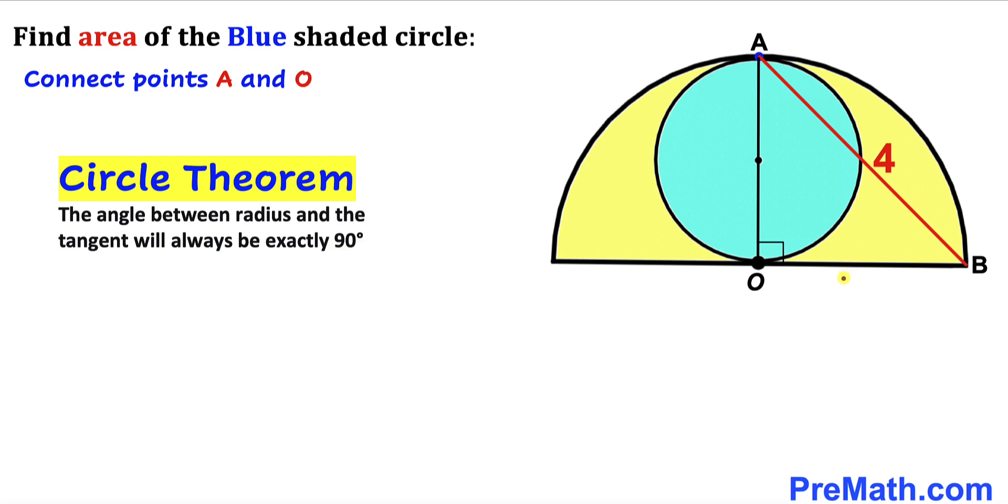So therefore we can see that this OB is our tangent line and this OA is the diameter. So therefore this angle has got to be 90 degrees.